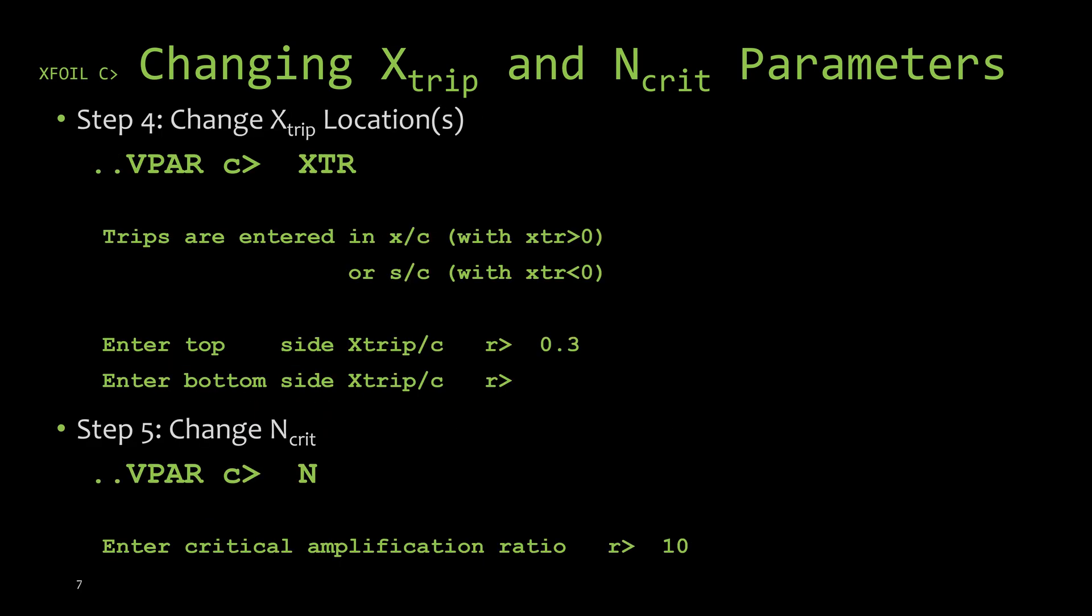While you're in this boundary layer parameters menu, you can change the trip locations by typing in XTR at the command prompt. It's going to then give you a prompt for the top layer. Here I went ahead and typed in 0.3 from the example earlier. Then hit enter and then it will prompt me for the transition location on the bottom surface. I don't want to specify it, so go ahead and just leave it blank and hit enter.